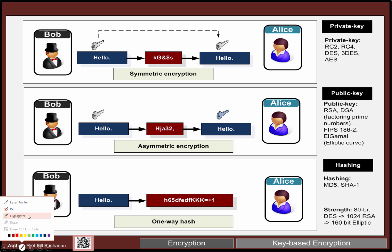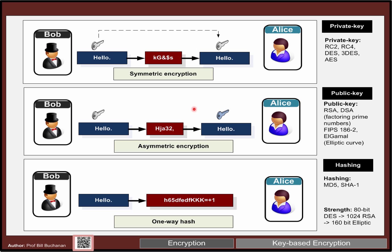We have three main methods. We have symmetric encryption where you use the same key to encrypt as to decrypt. We have public key or asymmetric encryption where you have a key pair and use one key to encrypt and the other key to decrypt. And then we have hashing methods which provide a one-way function to go from our data into a fixed length hashed value.